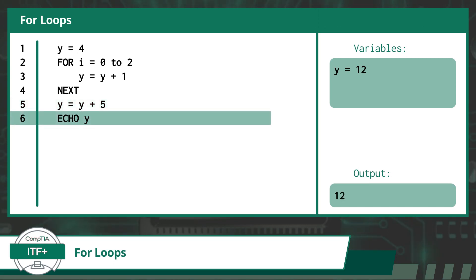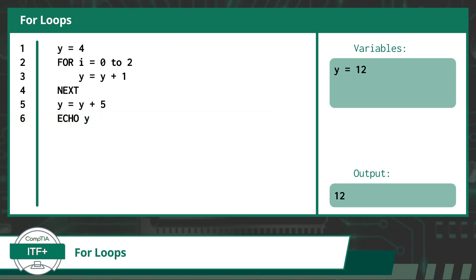Next on line 6, we see the word "echo." Echo is a word used by some programs to perform an output. In this case, our program is called to output the value of y, which is currently 12. And with no more lines of code, our program ends. Now, if you ever feel like you're stuck in an infinite loop of confusion, just press pause, grab a snack, and debug your frustrations before diving back into our video series.